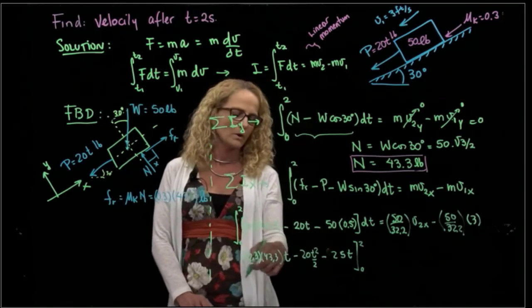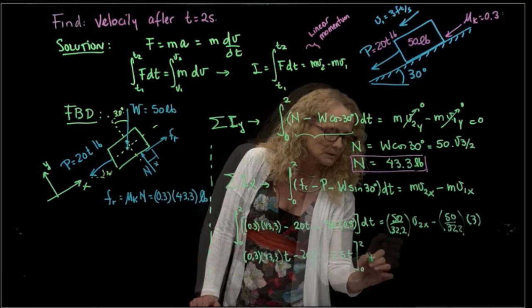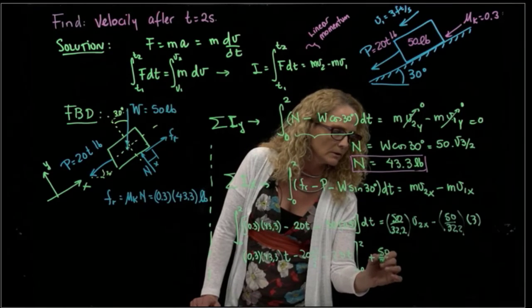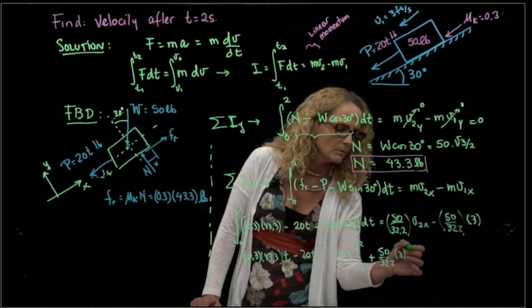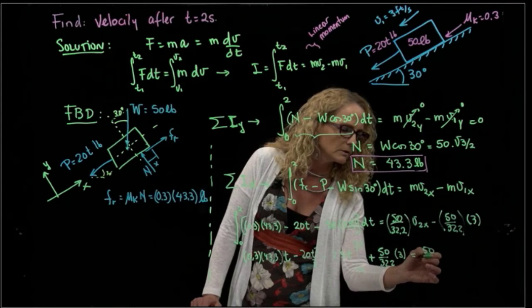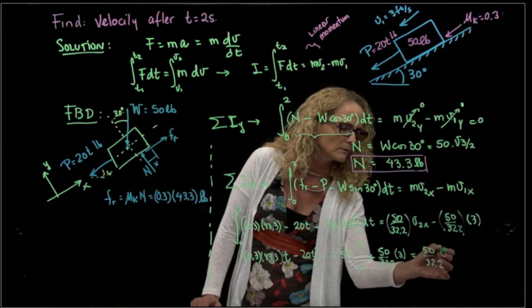So when I evaluate that in 0 and 2, well, I just have to multiply by 2, plus 50 over 32.2 times 3 will be equals to 50 over 32.2 times velocity of 2X.